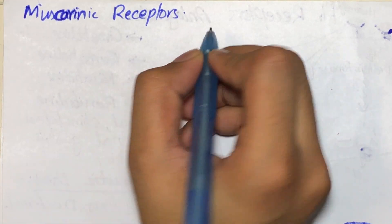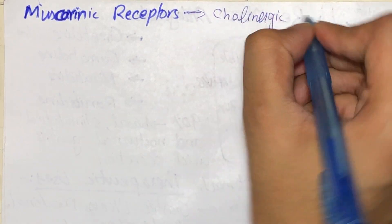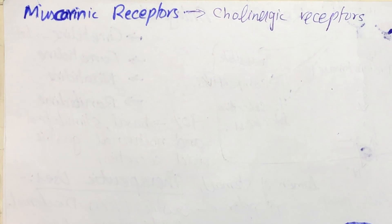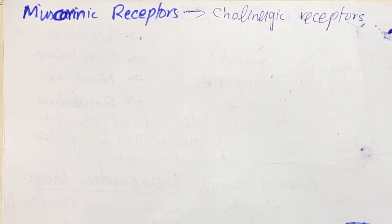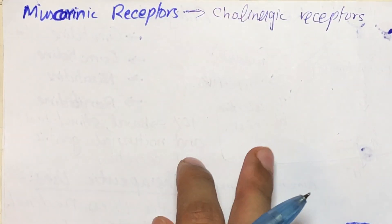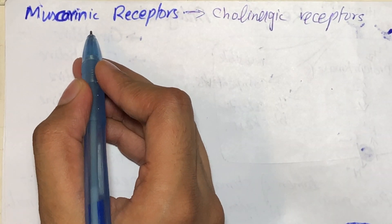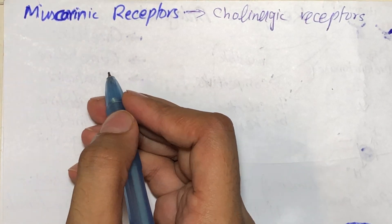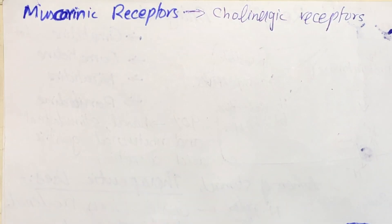In today's video we will be learning about muscarinic receptors. These receptors are actually a type of cholinergic receptor. Cholinergic receptors are of two types: muscarinic receptors and nicotinic receptors. They are differentiated on the basis of their affinity for certain agents that mimic the action of acetylcholine. Muscarinic receptors have more affinity for an alkaloid called muscarine, whereas nicotinic receptors have more affinity for nicotine rather than muscarine.